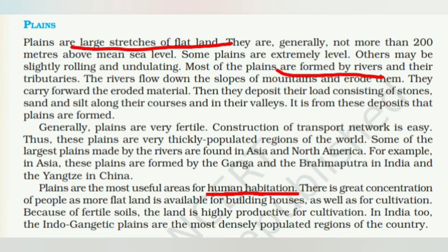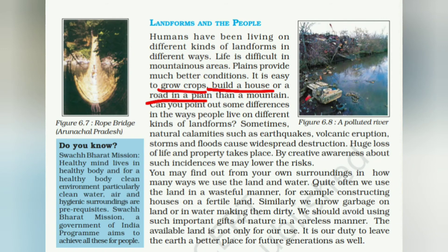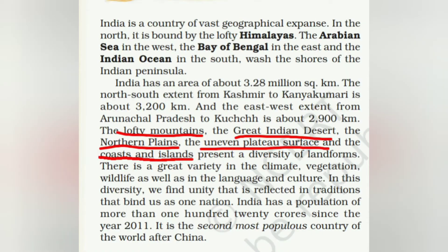Plains are large stretches of flatland — thickly populated because they are very fertile. In India, plains are formed by the Ganga and Brahmaputra rivers. The Yangtze in China is another example. Plains are productive for cultivation, easy for building houses, constructing roads, and general movement — which is why they are the most densely populated regions.